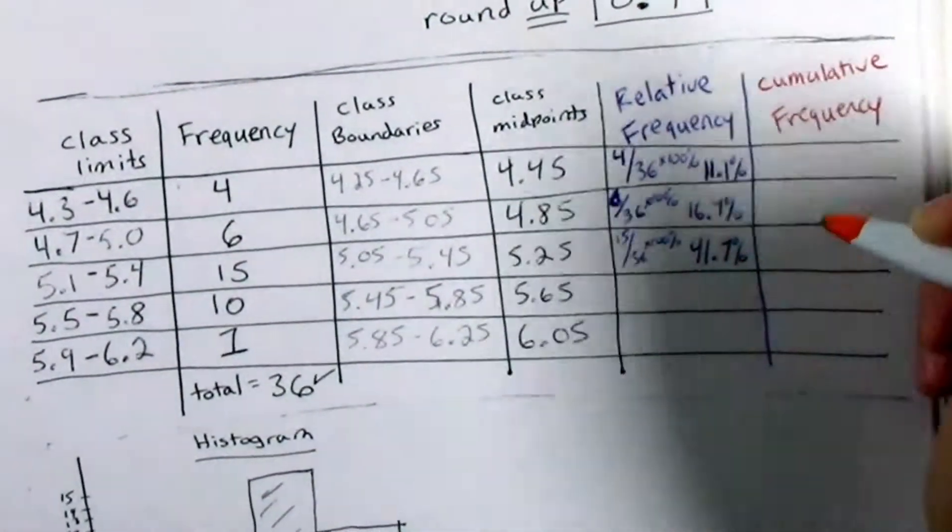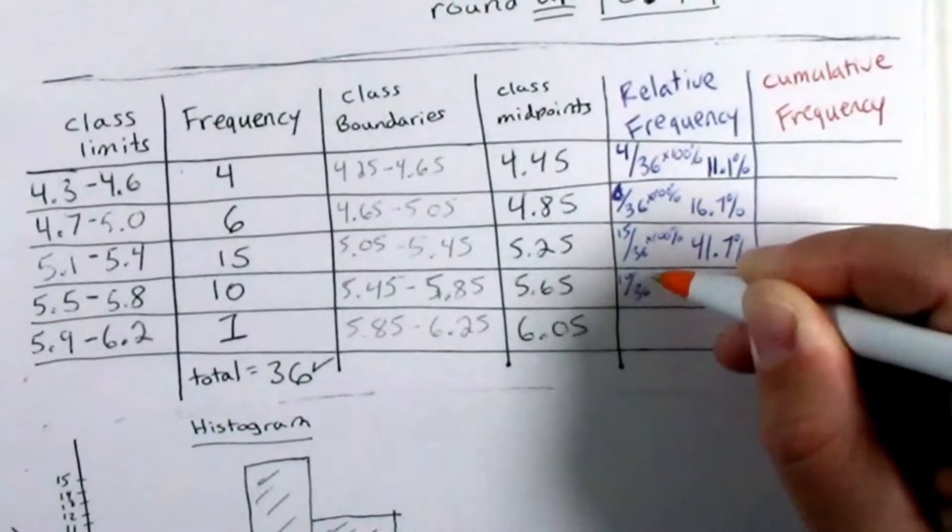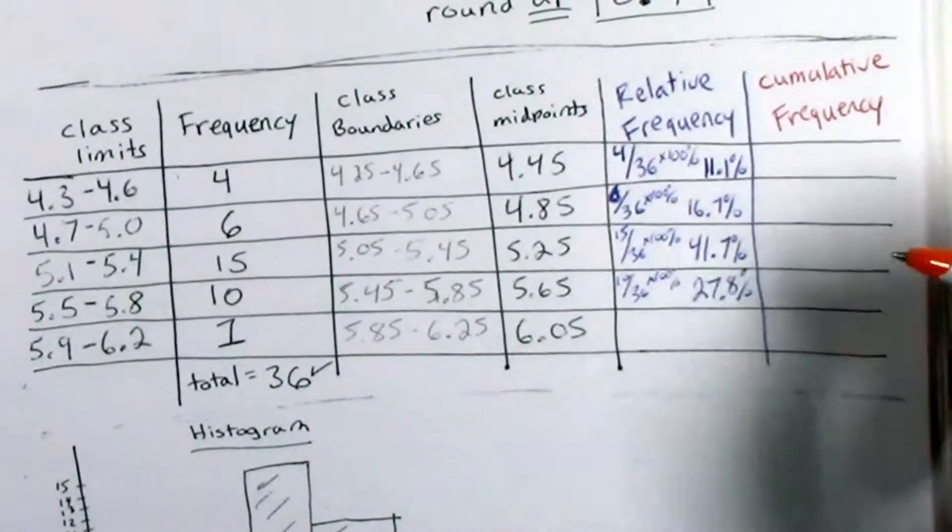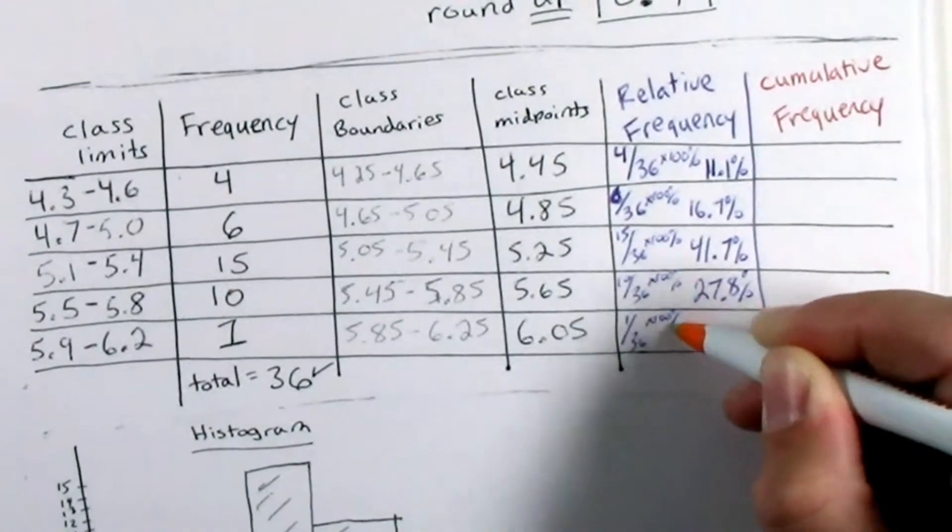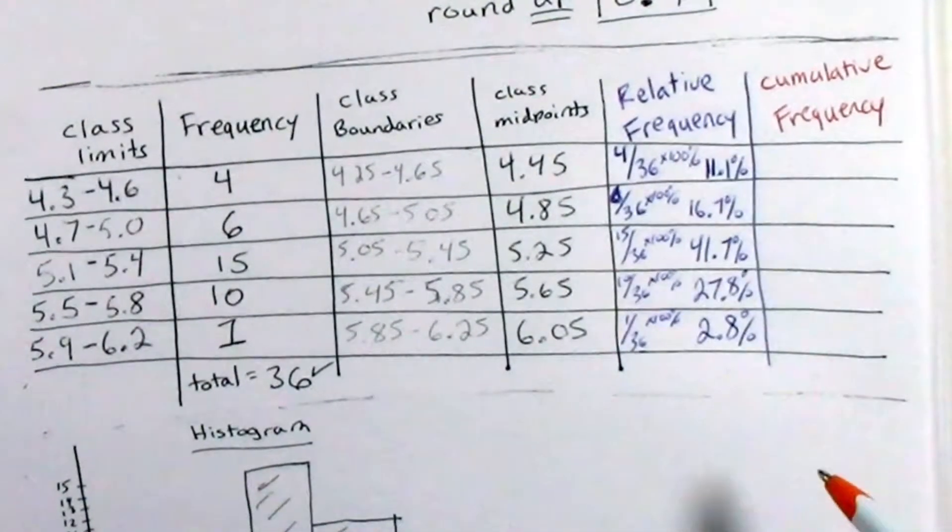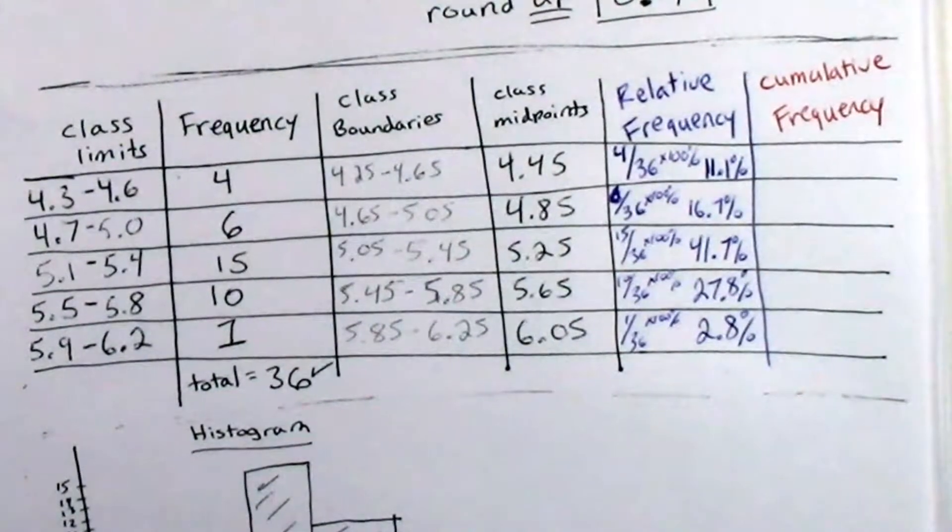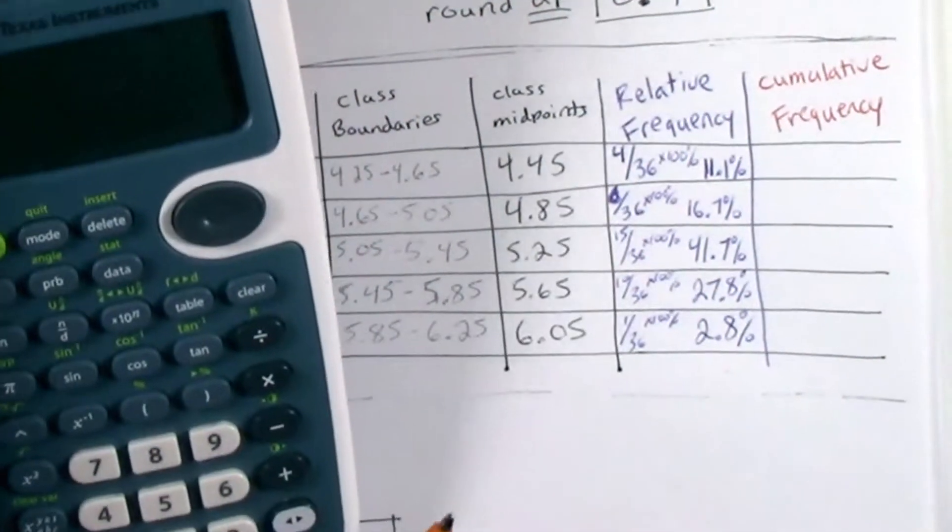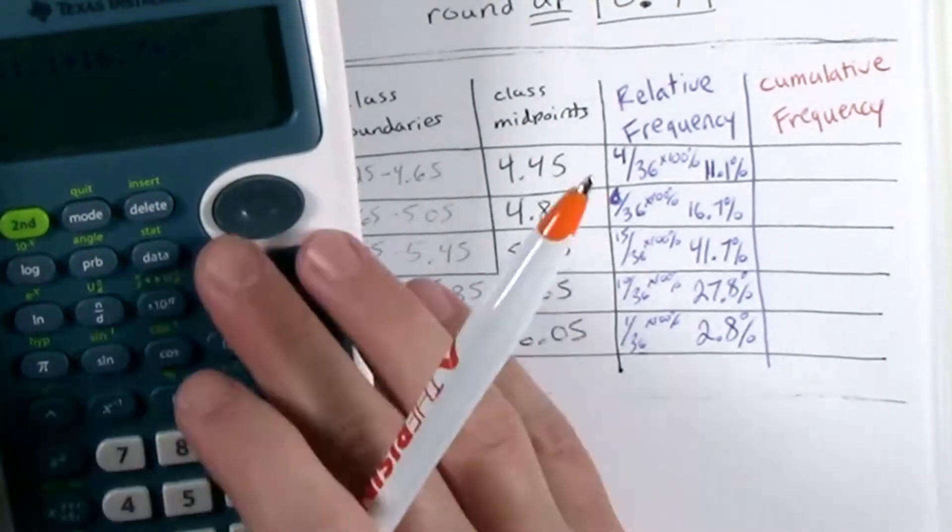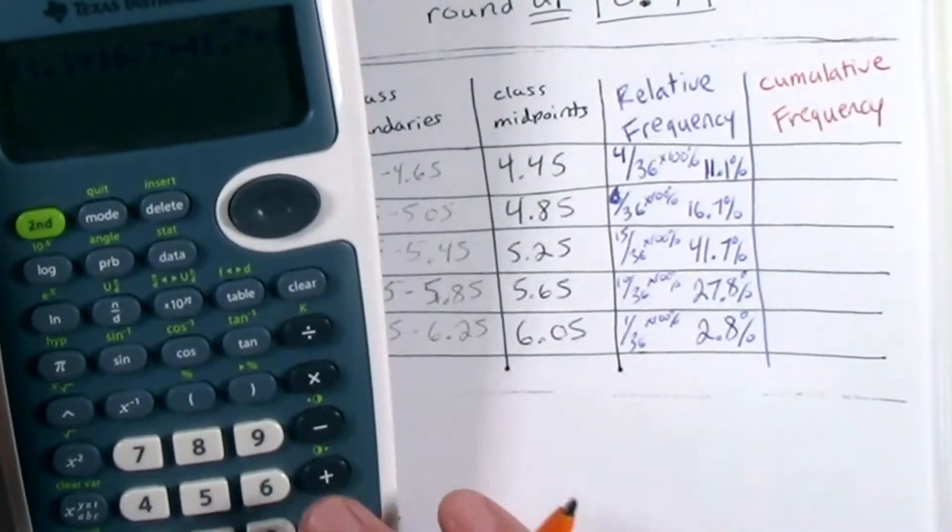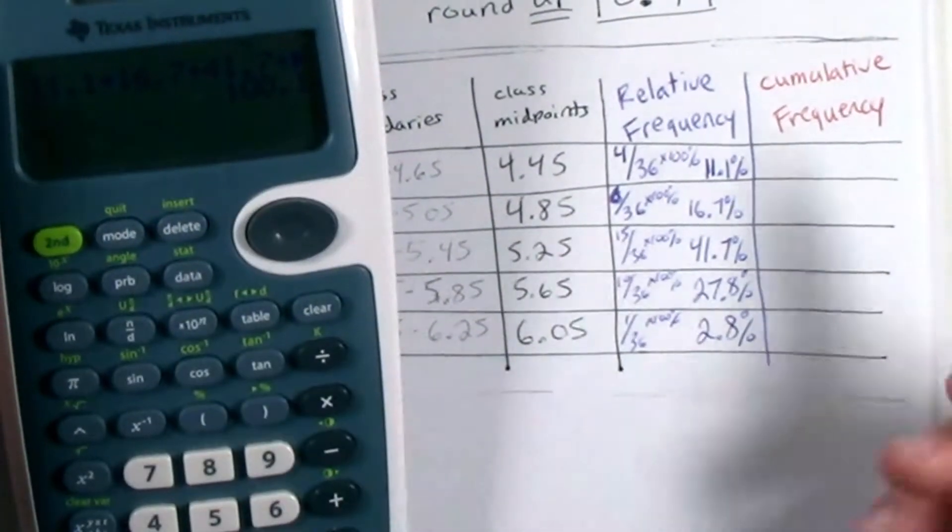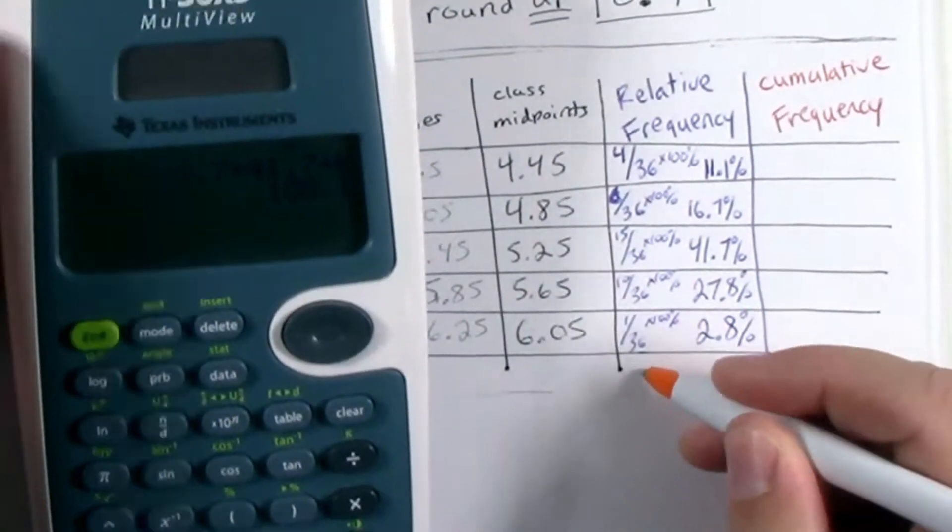15 observations in the third class out of 36. 10 observations out of 36 in the fourth class. And lastly, one observation out of 36 in the last class. If you add up your relative frequencies, you should get 100%. And when I do this, I get 100.1%. And what's going on there is some rounding error, and that's okay.